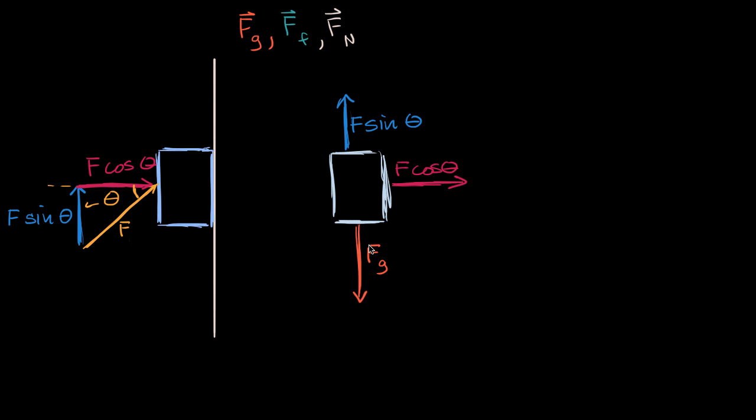and it would have magnitude F sub G. I'm not drawing the arrow now, because I'm just talking about the magnitude of this vector. Here I'm referring to the entire vector. I'm referring to its magnitude and direction.